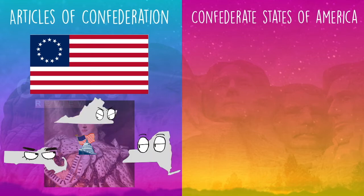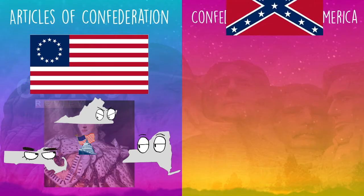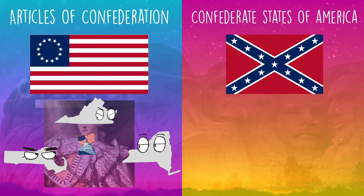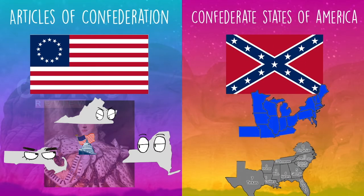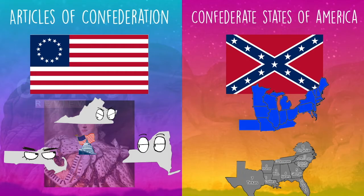We wanted the states to have all the power, so we tried it out. Didn't really work super well. The second time part of our country tried this is when the South seceded from the Union, which caused the Civil War. We called it the Confederate States of America, and the Confederate States really wanted the states to have control and the central government to not have very much.